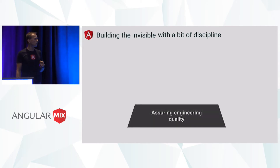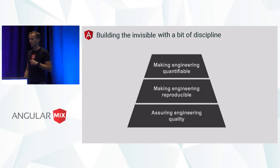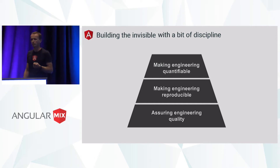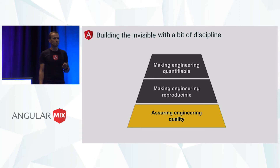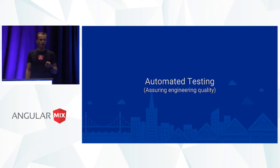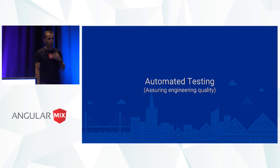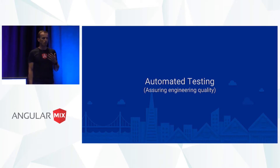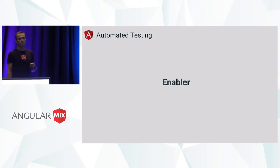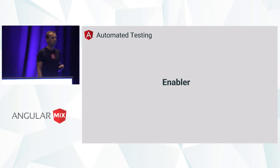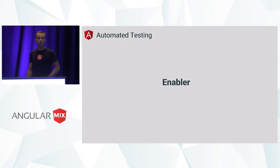Starting with assuring engineering quality, we'll also take a look at how we can make engineering more reproducible, and lastly, how to quantify engineering effort. Assuring engineering quality is at the very basis because it's the fundamental thing that allows us to build software. We often talk about this as implemented through automated testing. For me and many people at Google, automated testing is the enabler — the thing that allows us to iterate on code, bring more features, make risky refactorings, make aggressive performance optimizations, all while knowing that all the features we built already still work. This allows us to ship product into production confidently.